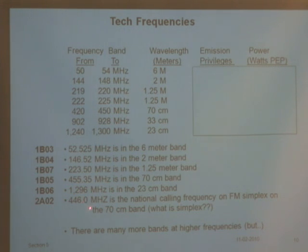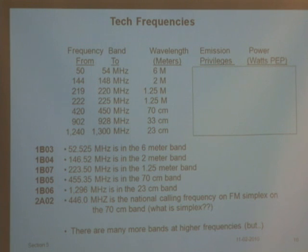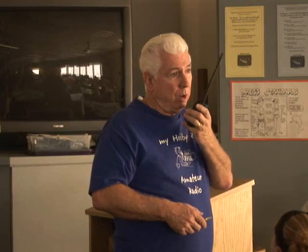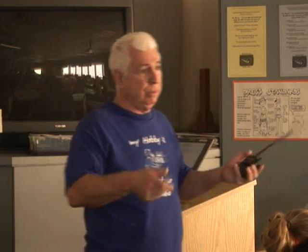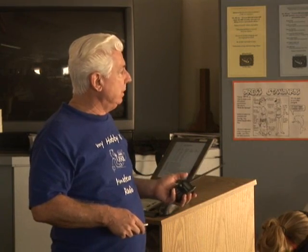446 megahertz is the national calling frequency for FM simplex on the 70-centimeter band. Simplex means you and I are using the same frequency — I talk, then you talk back on that same frequency. When we use a repeater, we transmit on one frequency and listen on another — that's called duplex. This calling frequency is set up so that if someone wants to call out and see if anybody's listening — maybe for an emergency — there's a designated spot to do it.